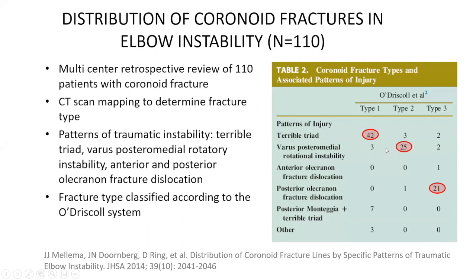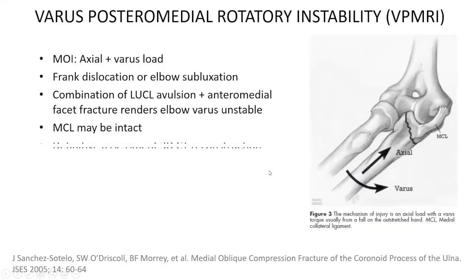The majority of type 2 fractures were seen in varus posteromedial rotational instability injuries, and within this group this was also the most common fracture pattern. Type 3 fractures were most commonly seen in posterior olecranon fracture dislocations. Investigators reported cases of medial oblique compression fractures of the coronoid, typified by a combination of axial and varus load to the elbow, characteristically leading to an LUCL avulsion and an anteromedial facet fracture. If the fracture involved the sublime tubercle, the MCL would necessarily be compromised.